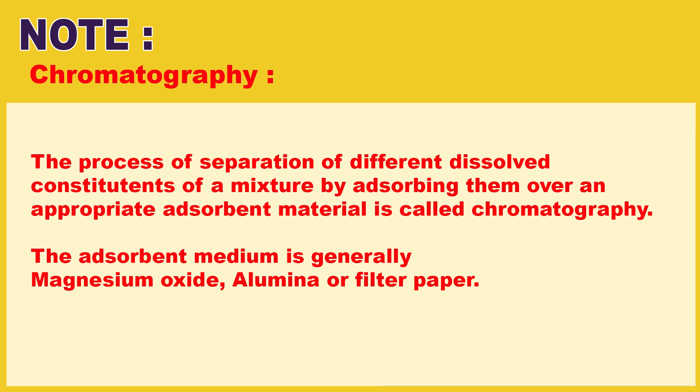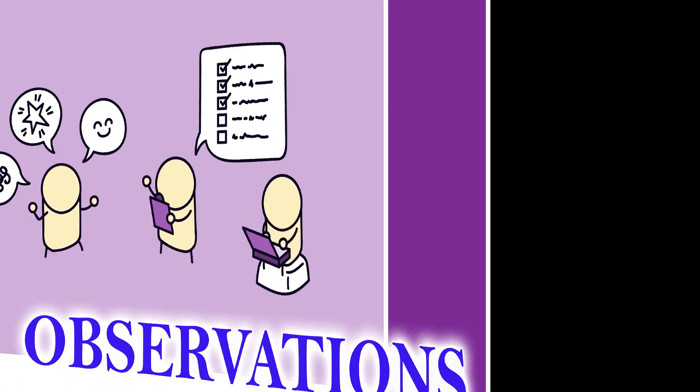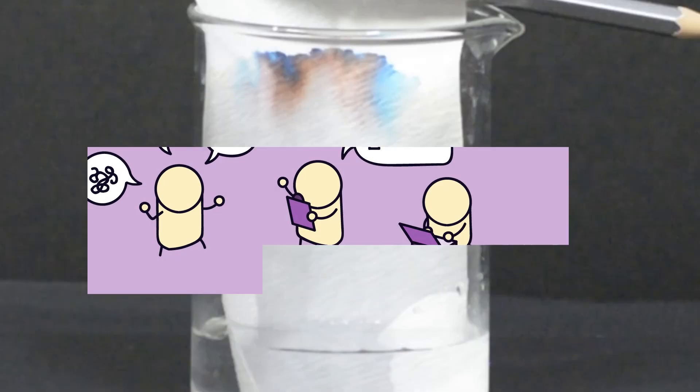Observation: The water rises up on the filter paper. The colored component that is more soluble in water rises faster, and in this way the colors get separated.